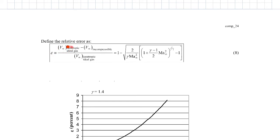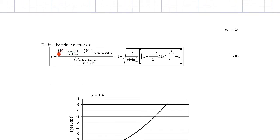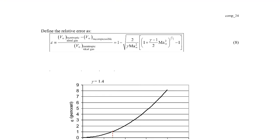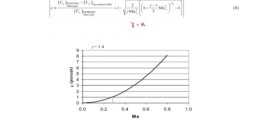Taking that V-infinity from the isentropic derivation, substituting in the incompressible expression from Bernoulli's equation, dividing through and doing the algebra, you get an expression for the relative error. Note that gamma here is the same as k — the specific heat ratio — just a different notation sometimes used in compressible flow or gas dynamics. We can then plot that relative error.